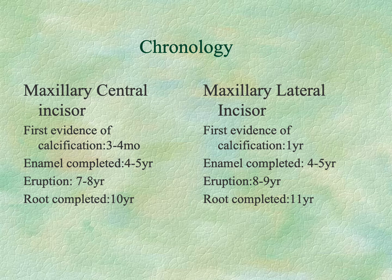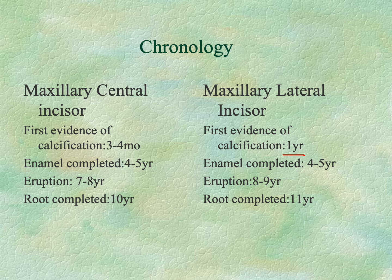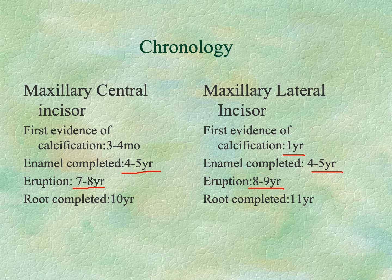Comparing maxillary central and lateral incisors by developmental timing: the central incisor has first calcification evidence at three to four months, enamel completion at four to five years, eruption at seven to eight years, and root completion around ten years. The lateral incisor begins calcification at one year, enamel completion similarly at four to five years, erupts at eight to nine years, and root completion around eleven years.